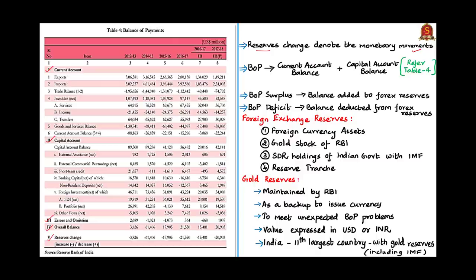The sum of the current and capital account balance is the balance of payment. The balance is added to the foreign exchange reserve if the balance of payment is surplus, and deducted from the foreign exchange reserve if the balance of payment is in deficit, meaning payment is made out of the old balance of foreign exchange reserve. The foreign exchange reserves consist of foreign currency assets, gold reserves of RBI, special drawing rights (SDR) holdings of Indian government with IMF — the International Monetary Fund — and Reserve Tranche.